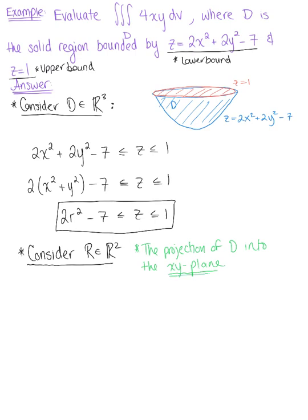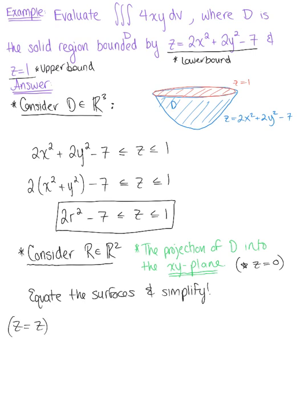Working in the xy-plane, z equals 0. To find this two-dimensional region, we equate the surfaces and simplify. Setting z equal to z gives us 2x squared plus 2y squared minus 7 equal to 1. Factoring out 2, we have 2 times (x squared plus y squared) equal to 8.